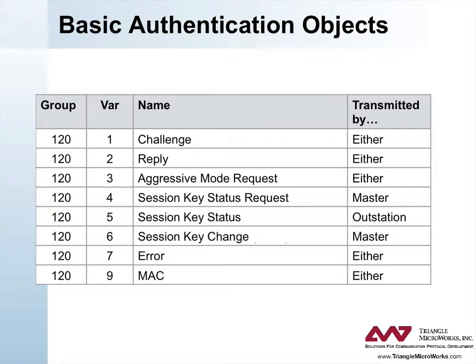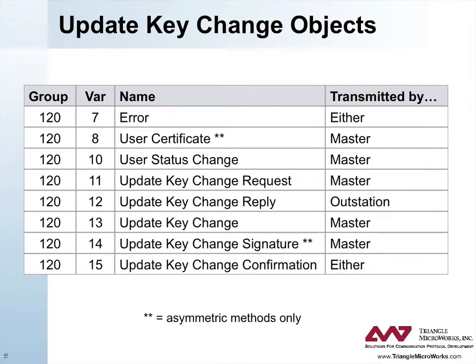Devices can stop sending error messages at any time to avoid denial of service attacks. This slide shows the update key change objects that are sent as variations of group 120, as well as whether they are transmitted by the master, the outstation, or either.